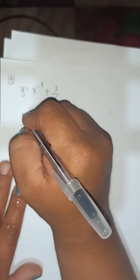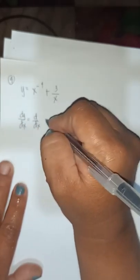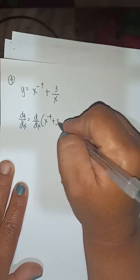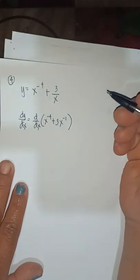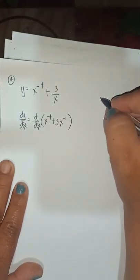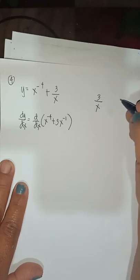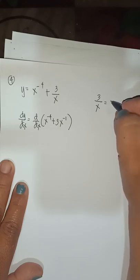First line, dy over dx equals d/dx of x to the negative 4 plus 3x to the negative 1. Because when we bring x up as a numerator, 3 over x is equivalent to 3x to the negative 1.